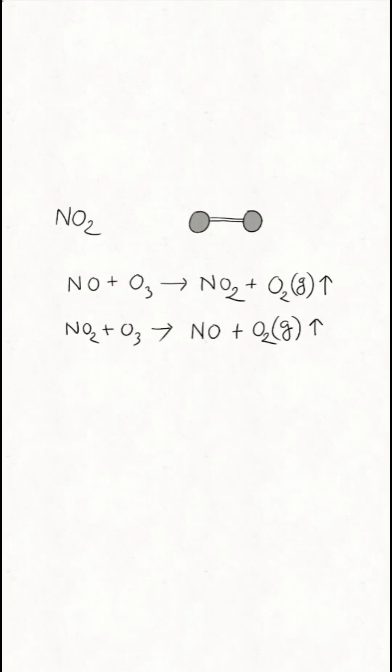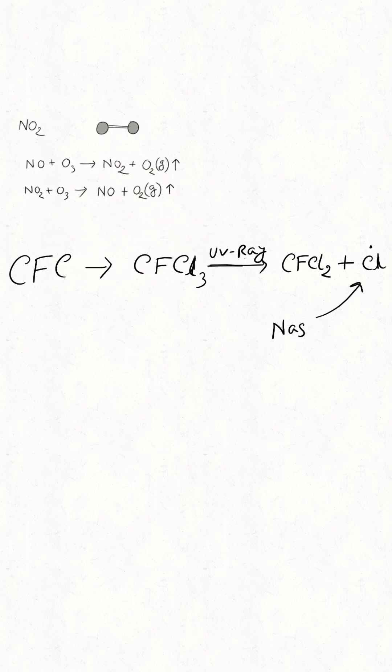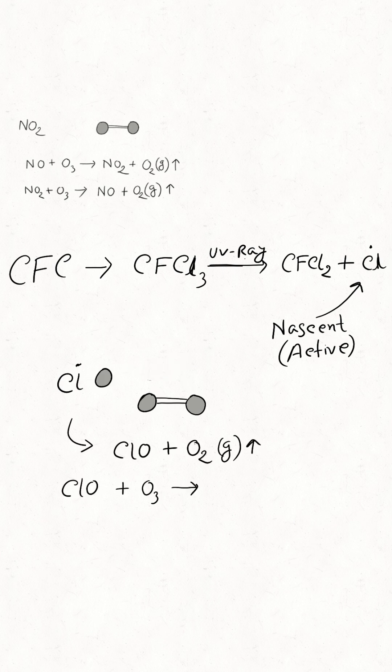In the case of CFC chlorofluorocarbon, when it reacts with UV rays, it produces CFCl2 and Cl chlorine atom, which is very active. This active chlorine atom again reacts with O3 ozone gas and breaks it into smaller oxygen gas and ClO chlorine oxide.